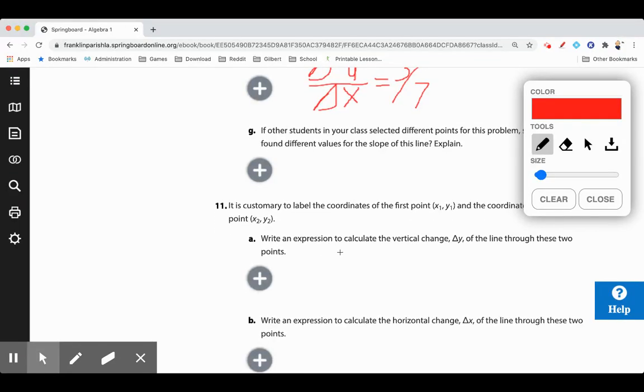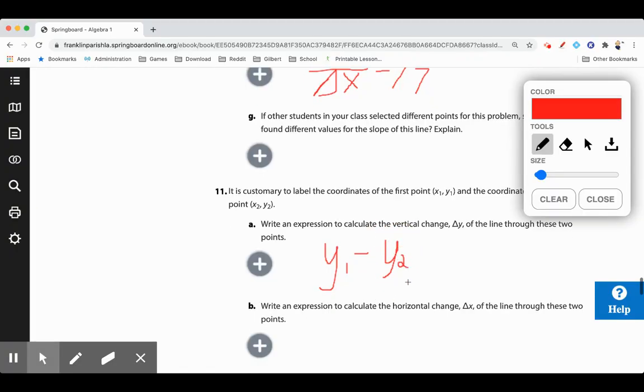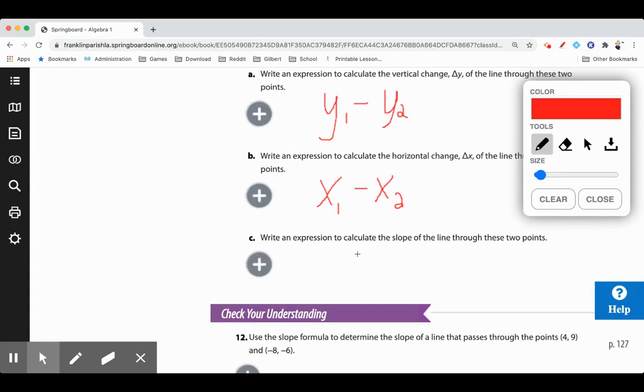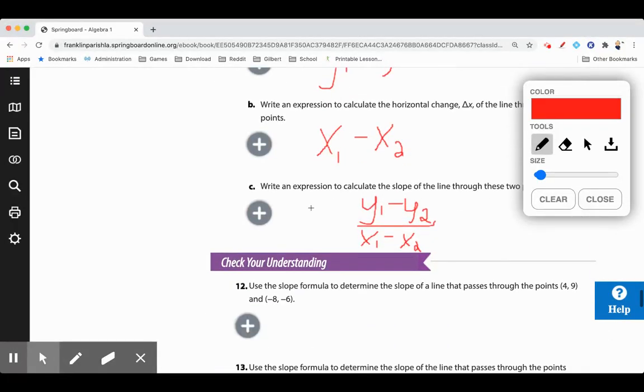If we want to write the expression to calculate the vertical change using this terminology, we'll say y1 minus y2. And the expression for the horizontal change, x1 minus x2. How much did they change? What's the difference? Subtract. And if we want to put that together and use it as our slope, we'll say y1 minus y2 over x1 minus x2. This is going to be our new formula for slope. Vertical over horizontal, rise over run. Remember, we're using m for slope.